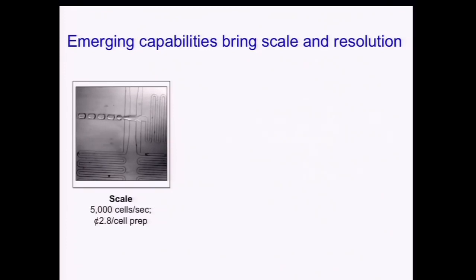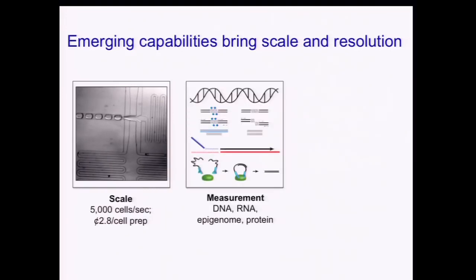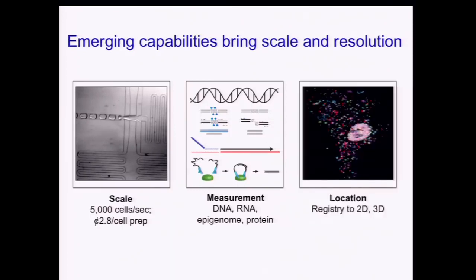Using reverse emulsion droplets, which is what we see in this movie, we can handle cells very quickly at the rate of thousands per second. And with clever barcoding, we can bring down the costs of sample prep below 3 cents a cell. Advances from many different groups are also showing that we can measure many other variables besides RNA in single cells. And other advances are able to use experimental methods to register cells to 2D or 3D positions.